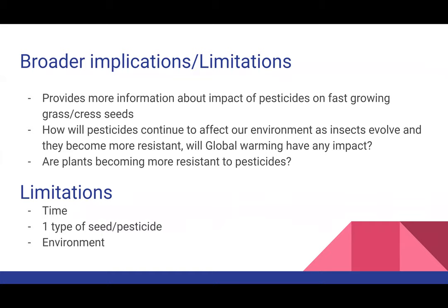Looking at the broader implications of this lab: overall, it provided a look at fast-growing seeds, especially watercress and grass seeds. There's a lot of research on the impacts of pesticides on agriculture, but there wasn't much I could find on grass and fast-growing plants such as watercress. So this was a good study that gave more information on pesticide impacts on those types of plants.